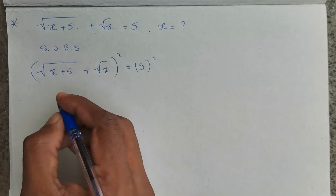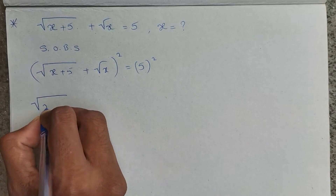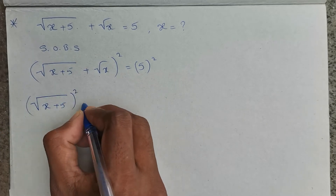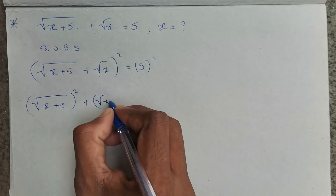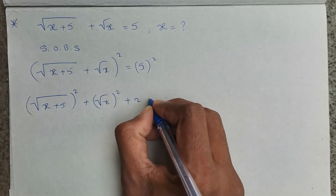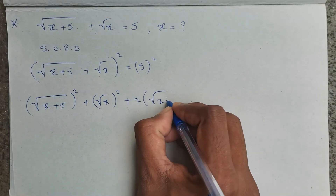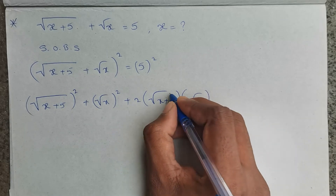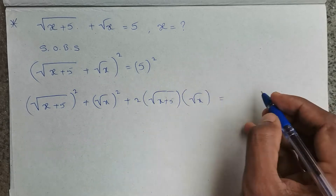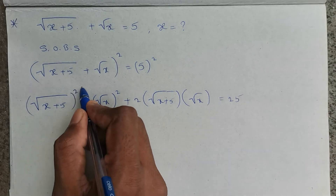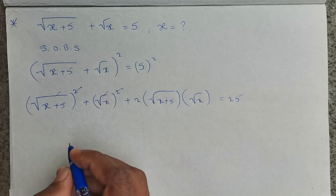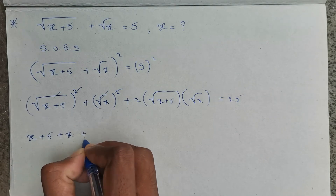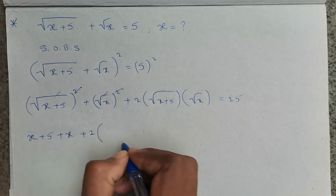The LHS is in the form of (a+b) whole square. Expanding, we get root x plus 5 whole square, plus root x whole square, plus 2 times root x plus 5 into root x, equals 25. The square and square root cancel on both terms, leaving x plus 5 plus x.